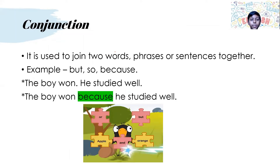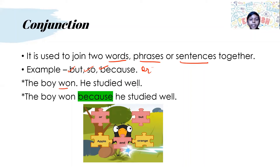Conjunction. It is used to join two words, phrases, or even two sentences together. Examples: but, so, because, or, etc. For example: 'The boy won. He studied well.' To join these two sentences we could use because: 'The boy won because he studied well.'